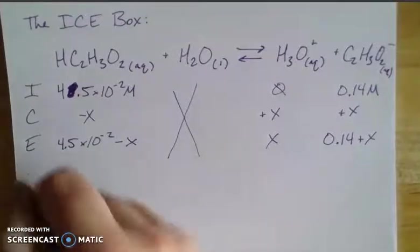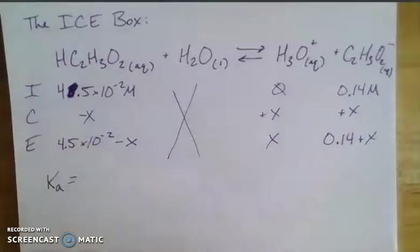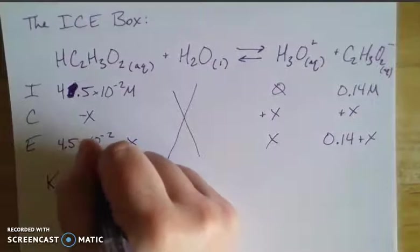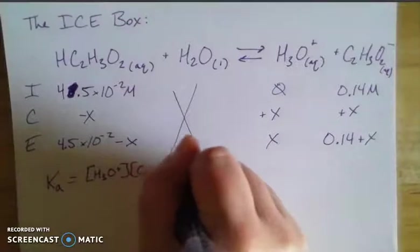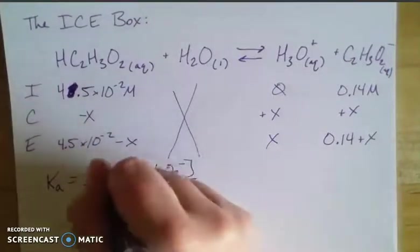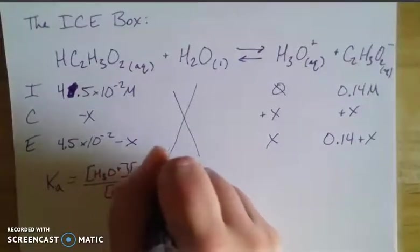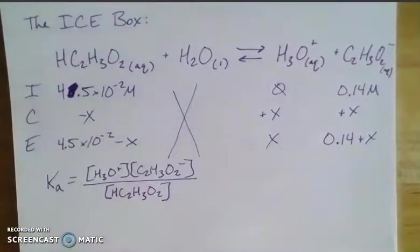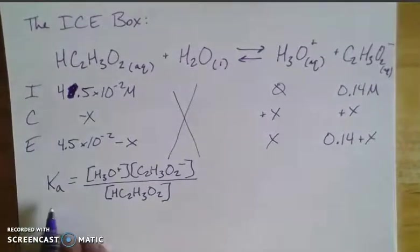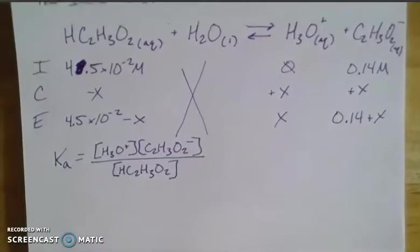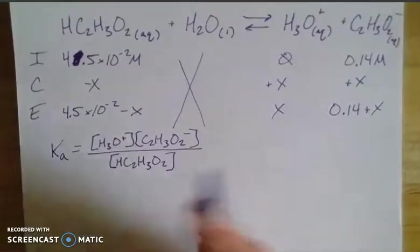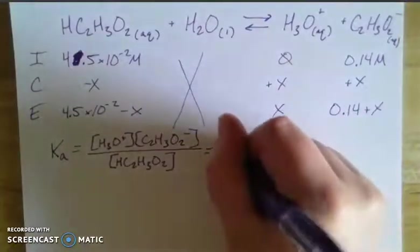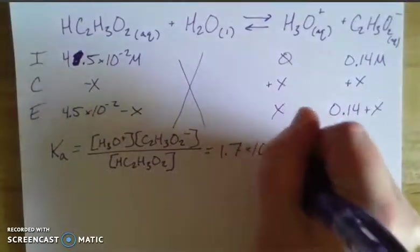And if I'm thinking about this in terms of a weak acid, which it is, then I'd have a Ka value, A for acid. And I'm going to have the concentration of my hydronium times the concentration of my acetate divided by the concentration of my acetic acid. And when I look up this Ka value, because weak acid Ka values are pretty readily available. You can look them up in tables, or they'd probably be given to you by your professors. Then I find that it's 1.7 times 10 to the negative 5th.